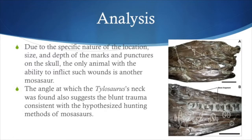To identify the attacker who could have inflicted these wounds on this Mosasaur fossil, the scientists observed the various aspects of the skull and neck. From analyzing the location, size, and depth of these marks and punctures located on the Mosasaur's skull, it was inferred that the only animal that could inflict such damage would be another Mosasaur. In addition, the angle at which the specimen's neck was found implies the same conclusion, as it suggests trauma consistent with the hypothesized hunting methods of Mosasaurs. From the picture in this slide, you can see the specific bite marks and locations found on the specimen.